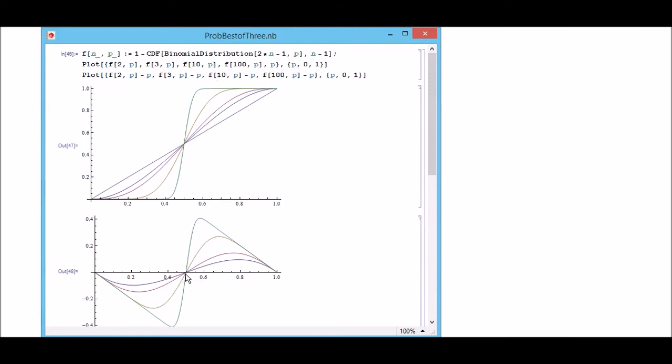So you can see the same here: this is the difference between p and the winning chance if you have to win more than one set.